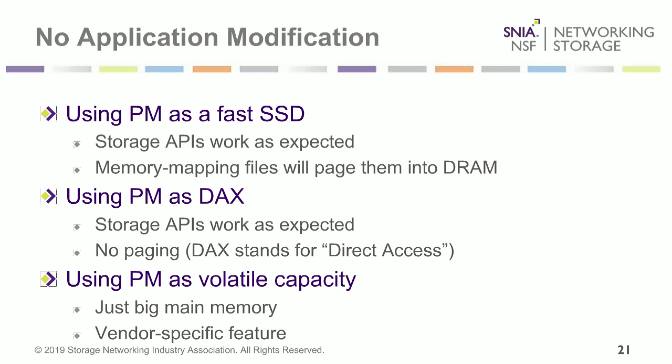When using persistent memory as a fast SSD, the storage APIs work as expected from the operating system, and memory-mapping files can page them into DRAM. When you use it as direct access, your storage APIs still work, but now you're not paging into DRAM — you're mapping directly to the persistent memory itself. And there's a third mode: using persistent memory as volatile capacity, where you potentially use DRAM as your cache and have one big, huge main memory. Most of the persistent memory available today is a much larger capacity than the actual DRAM that's available.